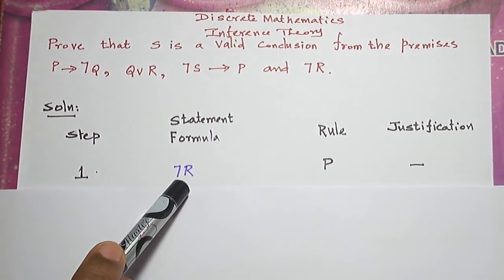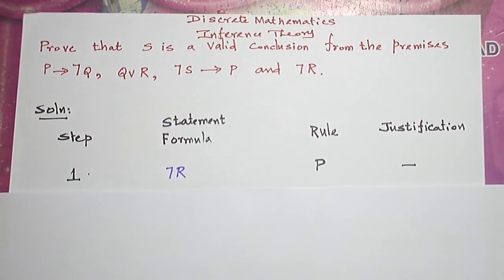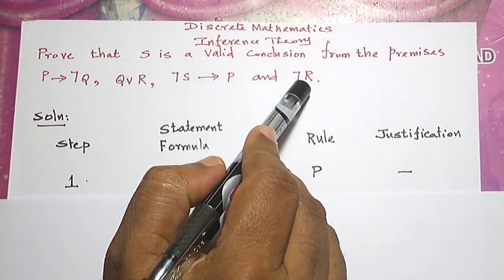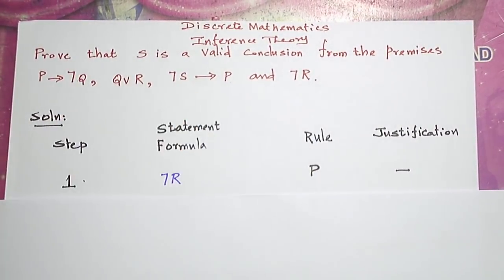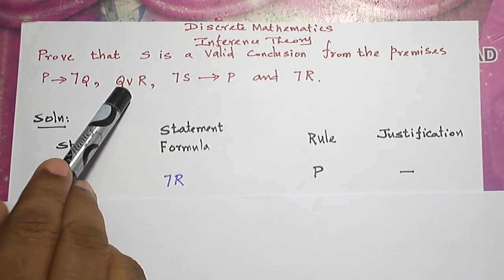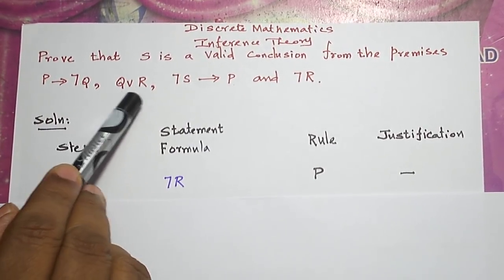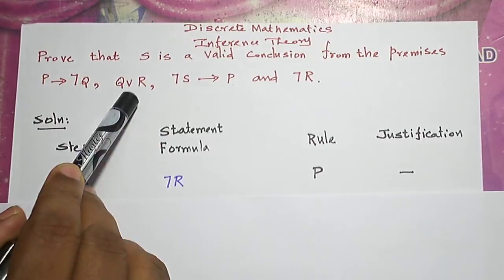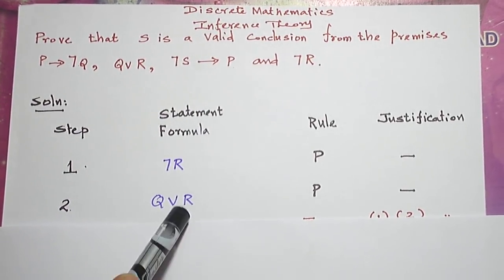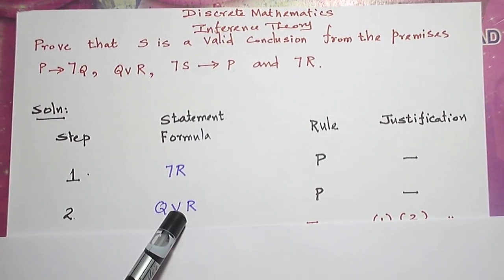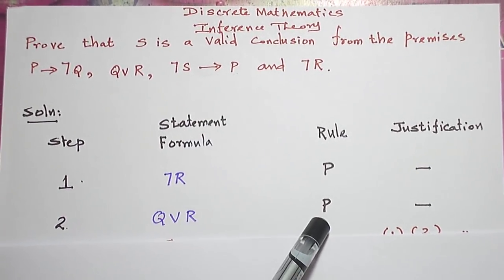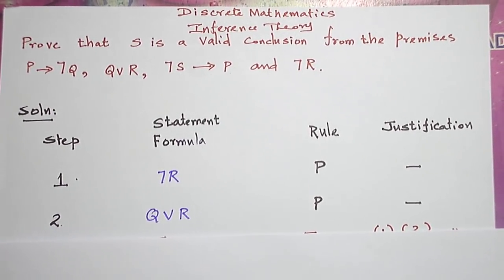Now I am going to take a formula that also involves R. The premise Q or R involves R, so let me take that statement formula. I am again introducing a premise, which is done using rule P, so I need not justify anything.